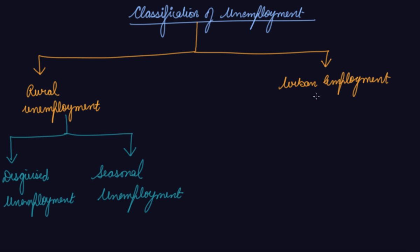In urban unemployment there are two types: number one is industrial unemployment and number two is educated unemployment.